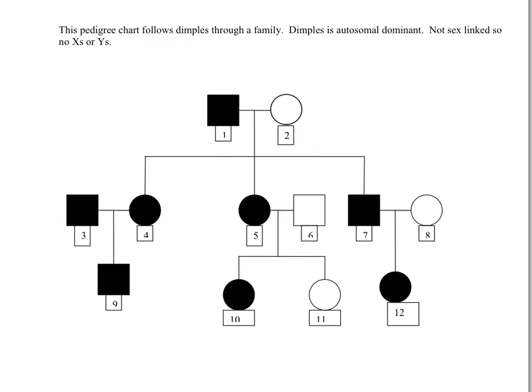Okay, this is the next pedigree chart. And this one is a little bit different because this one is going to follow dimples through a family. Now, dimples is autosomal dominant, which means it's not sex linked, so no X's and Y's. The gender of the individual does not matter. So each individual will receive two alleles.